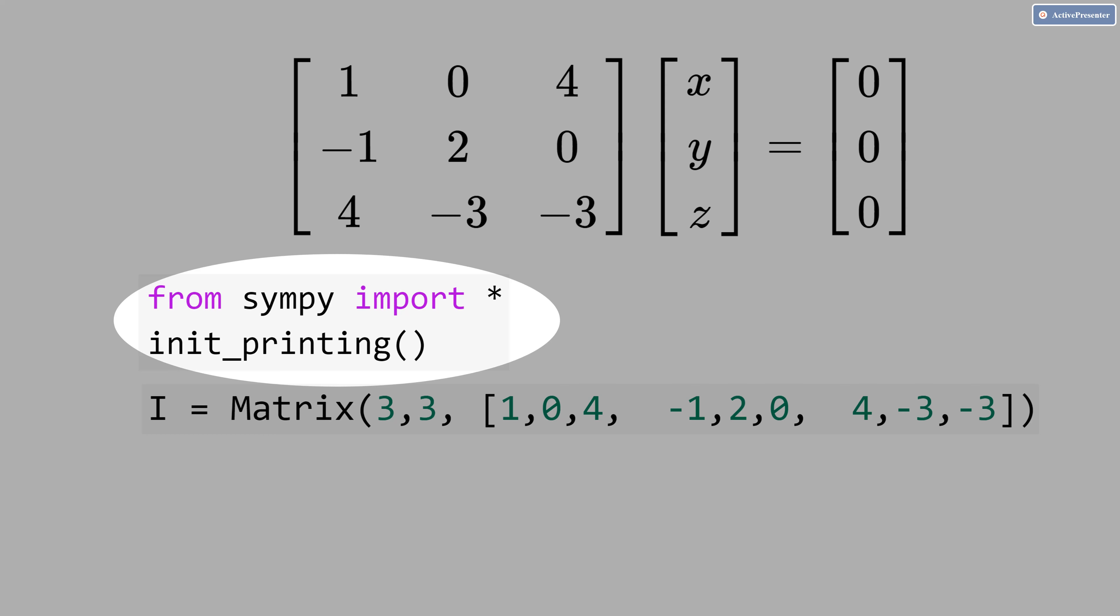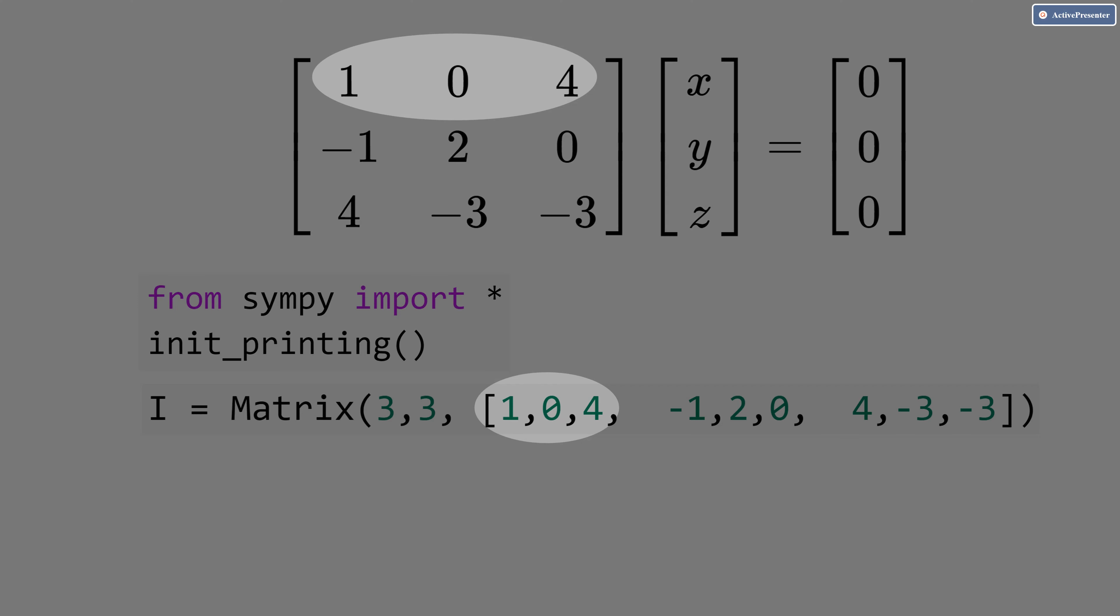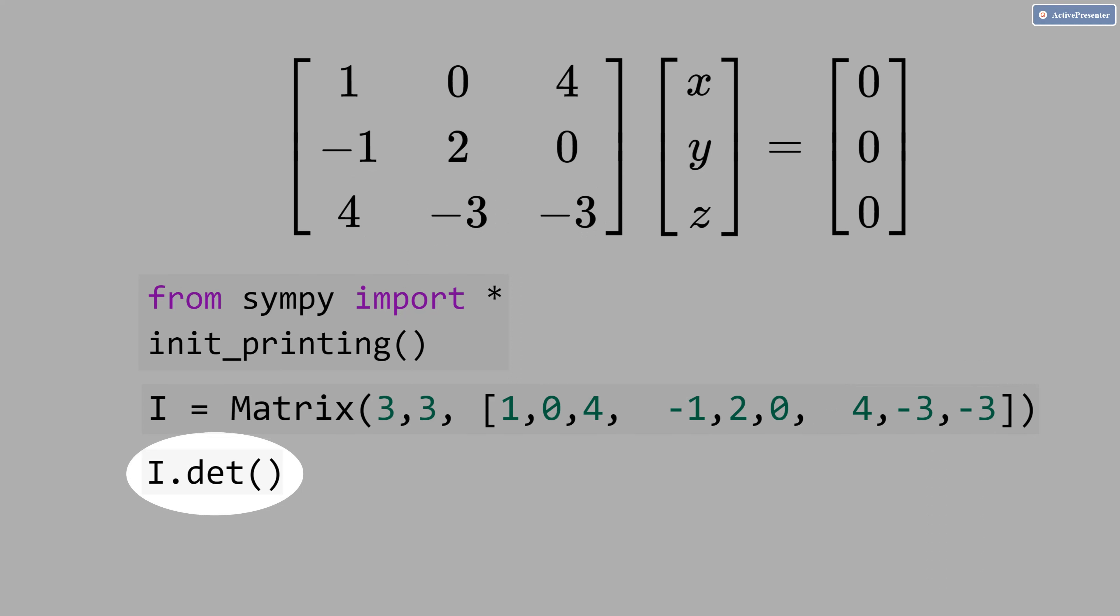Let's import SymPy. And let's define the matrix three rows and three columns. This is the first row, this is the second row, and this is the third row. Now, let's calculate the determinant of this matrix. And the result is minus 26. That's different than zero.